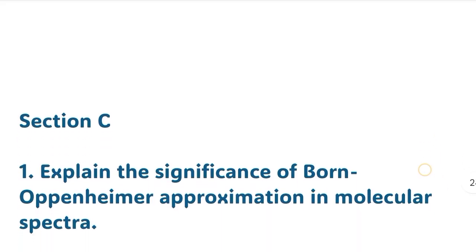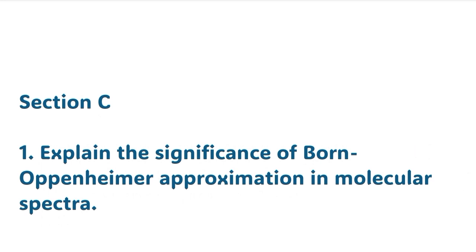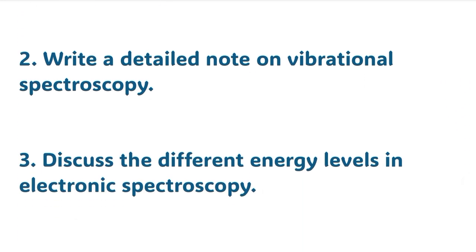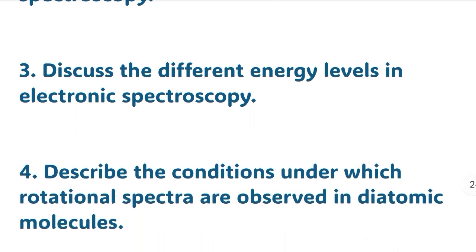Section C: First question, explain the significance of Born-Oppenheimer approximation in molecular spectra. Second: Write a detailed note on vibrational spectroscopy. Third: Discuss the different energy levels in electronic spectroscopy. Fourth: Describe the conditions under which rotational spectra are observed in diatomic molecules.